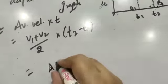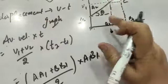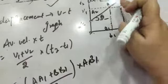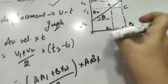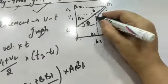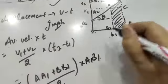If you observe carefully, this is half the sum of the sides into the perpendicular distance between them, which is the area of this trapezium. So you can write that is equal to area of trapezium.